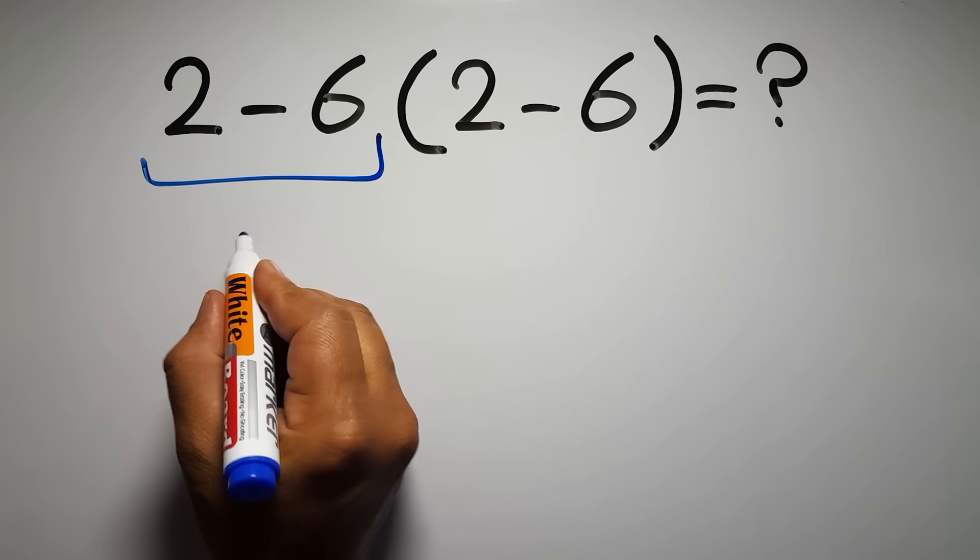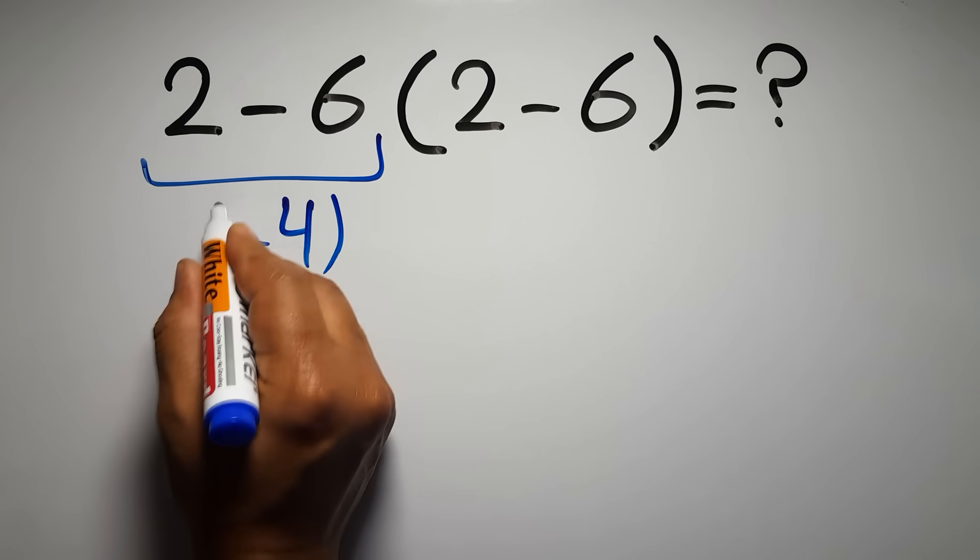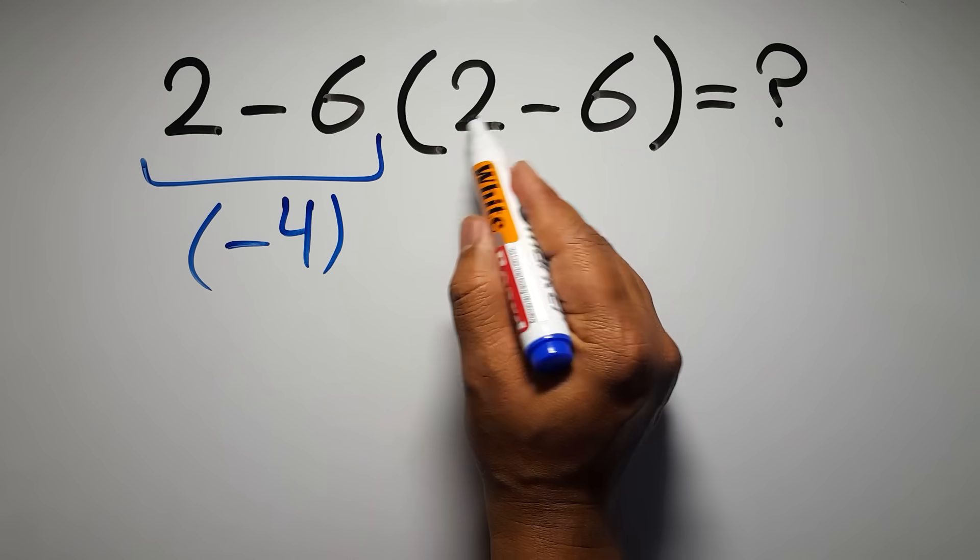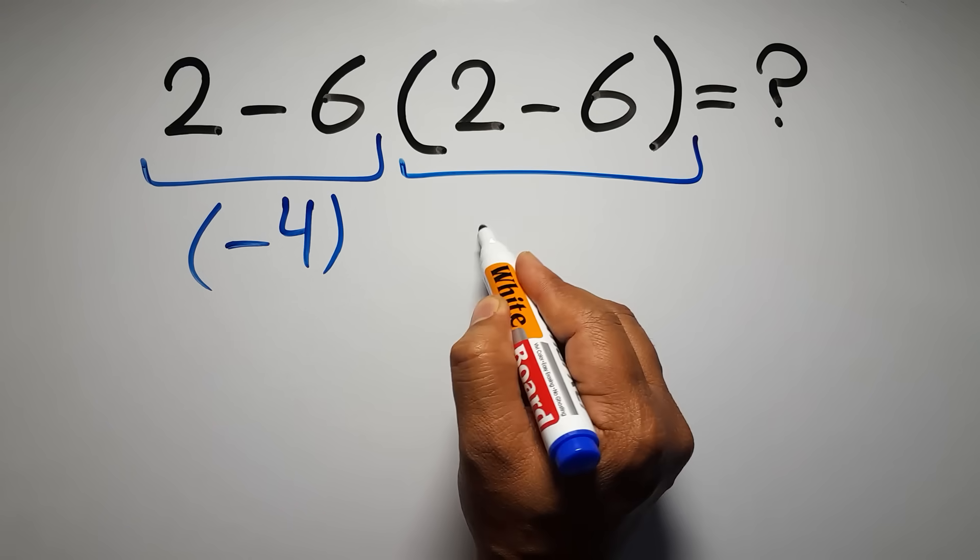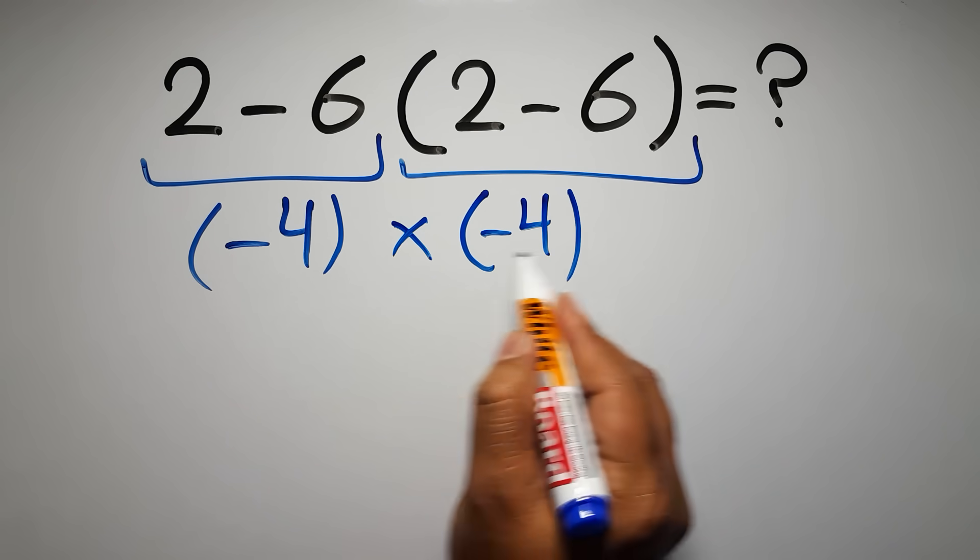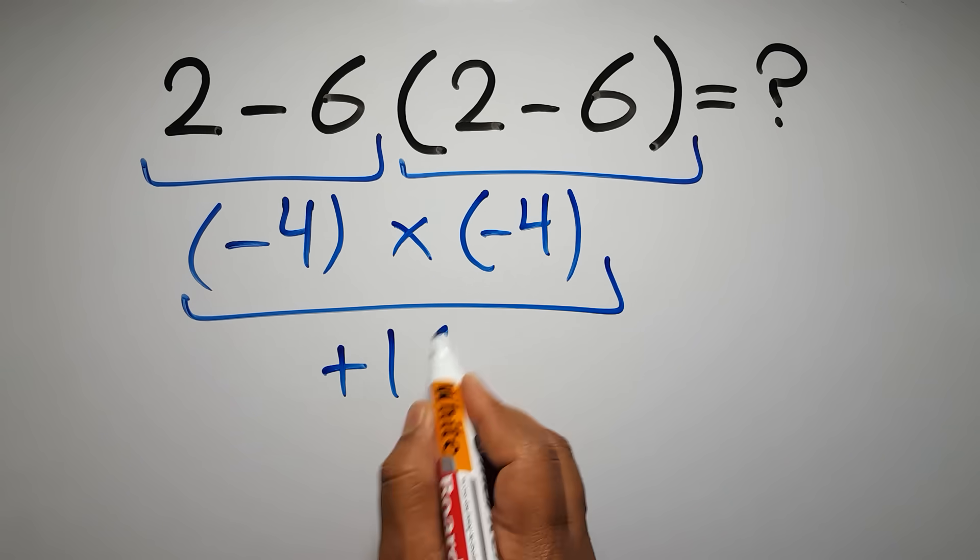2 minus 6 gives us negative 4, so negative 4 times, inside these parentheses we have 2 minus 6, which equals negative 4, so negative 4 times negative 4, which equals positive 16.